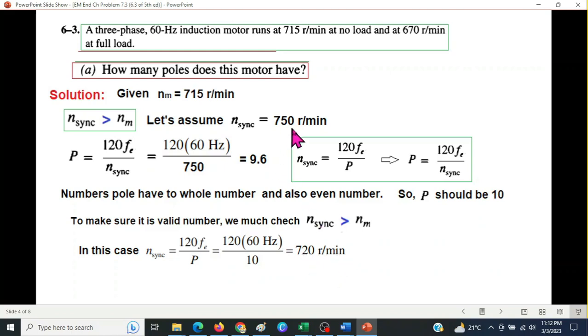So we have assumed 750, but when we take the number of poles to be 10, it comes to be 720 revolutions per minute. And this still is greater than 715 of the rotor speed. So this is greater than 715 and therefore our selection of the pole is correct. So finally we can say that the number of poles is equal to 10.